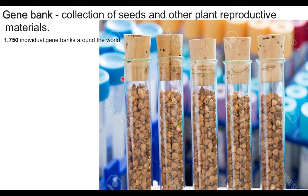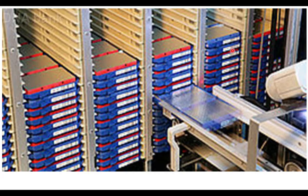What are gene banks? A gene bank is a collection of seeds and other plant reproductive material. More than 1,700 individual gene banks are found around the world. A DNA bank contains DNA fragments isolated from different plant parts.